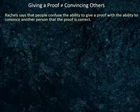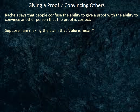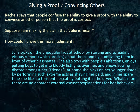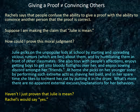The other reason Rachels believes many people think ethics is subjective is because they confuse the ability to give a proof with the ability to convince another person that the proof is correct. Rachels gives several examples of ethical proofs. Suppose I am making the claim 'Julie is mean.' How could I prove this moral judgment? Suppose I show that Julie picks on the unpopular kids at school by starting and spreading vicious lies about them and humiliating them in front of classmates. She also toys with people's affections, enjoys getting boys into bloody fist fights over her, and enjoys sowing discord amongst her friends. At home, she torments her younger sister by shaving her head bald, and in her spare time she likes to torment her cat by putting it in a dryer. And there are no apparent external excuses or explanations for her behaviors. Haven't I just proven that Julie is mean? Rachels would say yes.